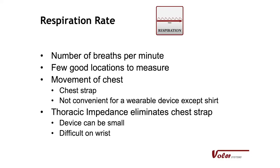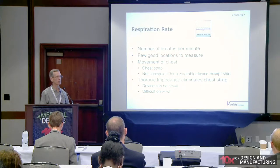Respiration is another very important parameter. The standard is a chest strap, which is easy to measure but inconvenient for a wearable device. Another approach is thoracic impedance — measuring the impedance of the chest as you breathe in and out, which changes and can be readily picked up. But this needs to be on the chest. People would like to put it on the wrist, but the wrist has a large impedance — your arm — between it and the chest, so that signal becomes much smaller and very difficult to use.